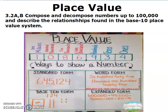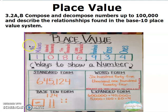As you can see here, we have a review of our anchor chart. It goes ones, tens, hundreds, thousands, ten thousands, hundred thousands, and a million. When you get to fourth grade you will be discussing the millions place, but in third grade remember we only go up to a hundred thousand.